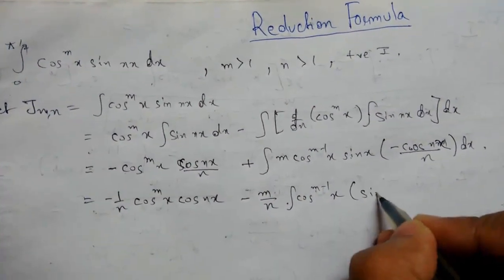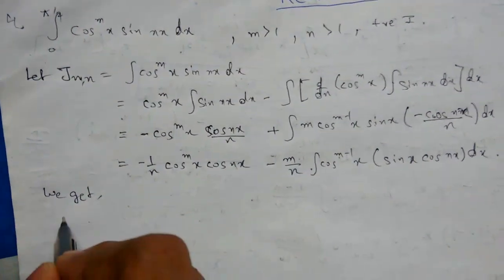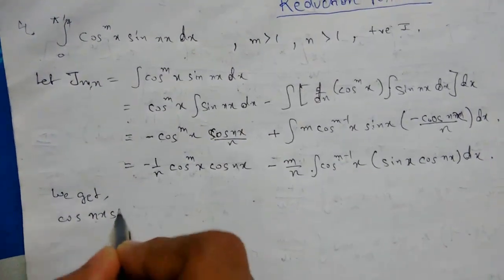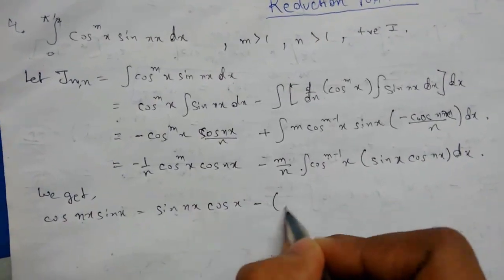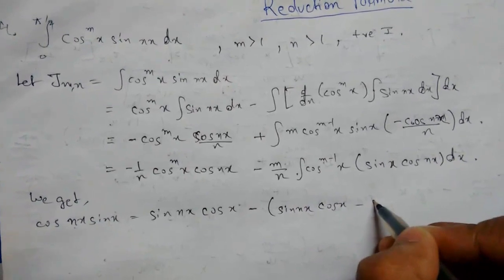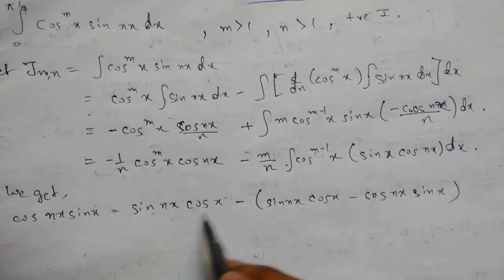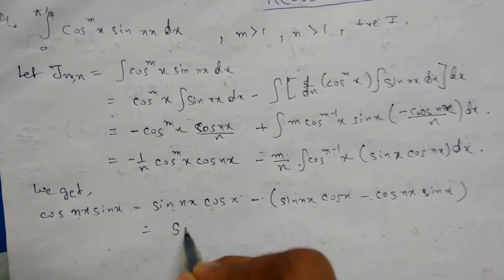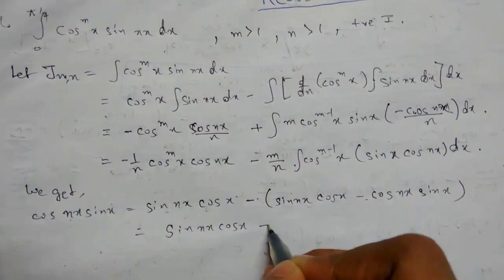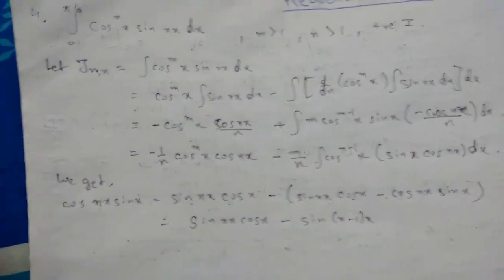Now we need to simplify the expression involving sin(x)·cos(nx). We use the identity: cos(nx)·sin(x) = sin(nx)·cos(x) minus sin((n-1)x). So here we see that terms cancel out, and we get sin(nx)·cos(x) minus sin((n-1)x). This is derived from the sin(a+b) formula, used to simplify our expression.